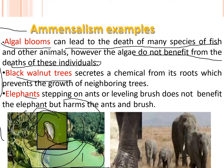Algae blooms do not provide any benefit to the ocean or river, so the algae remain in a neutral state — neither harmed nor benefited — whereas the marine organisms are in a state of loss because they die.